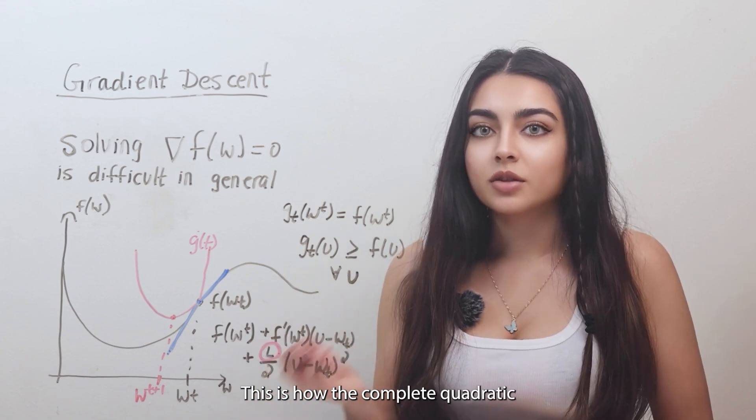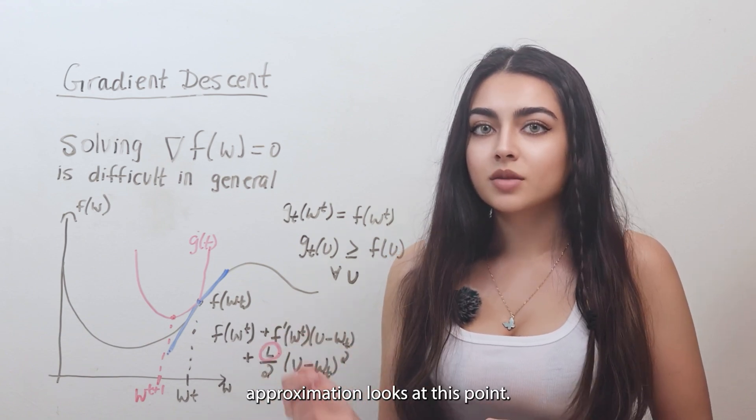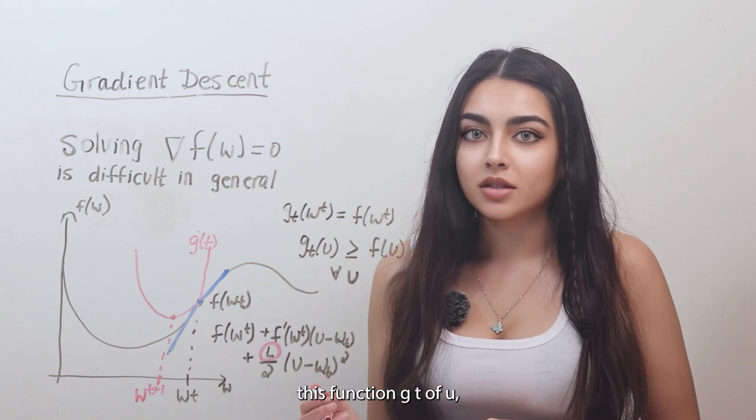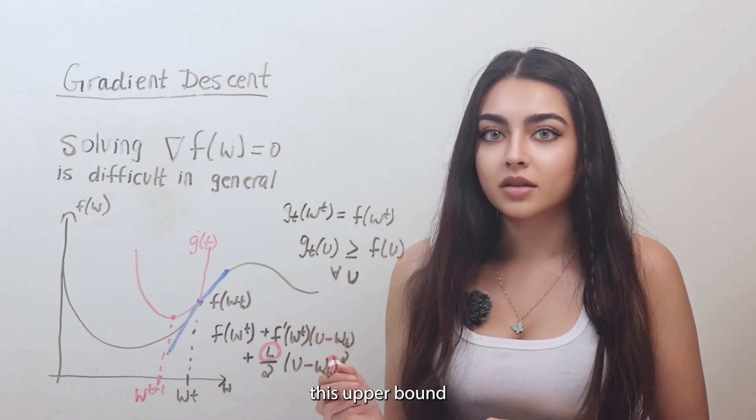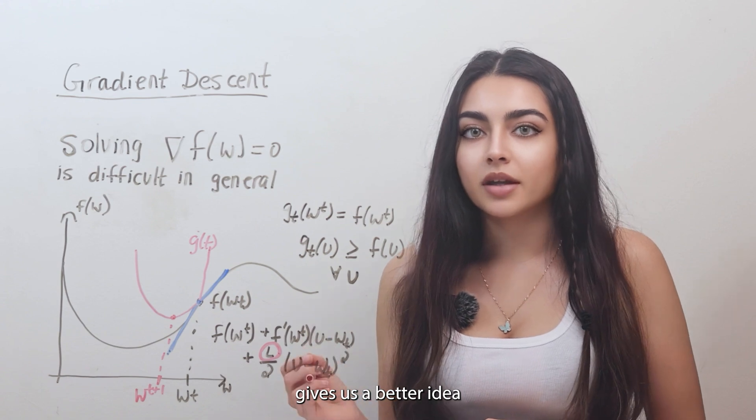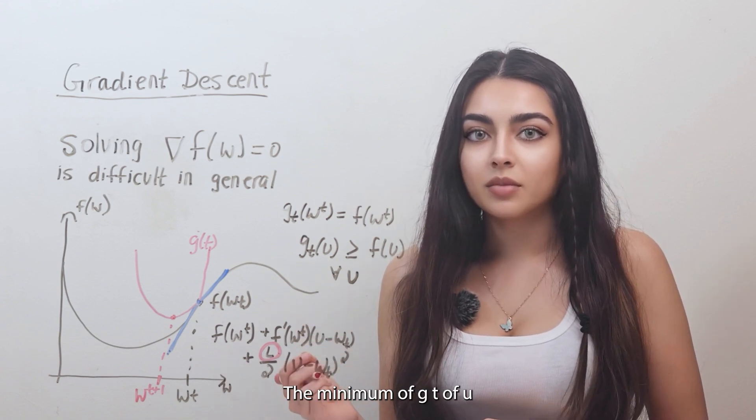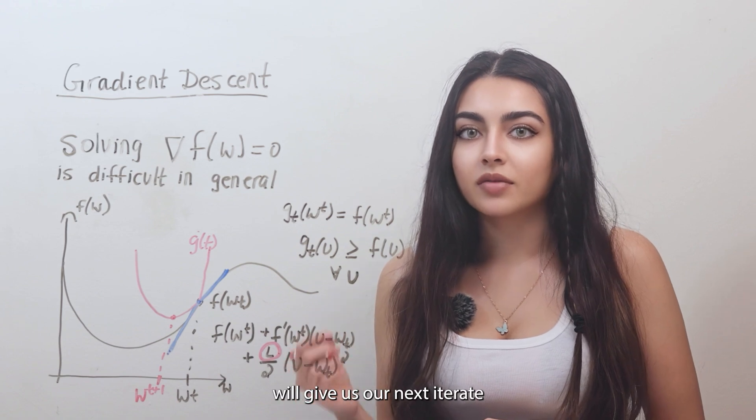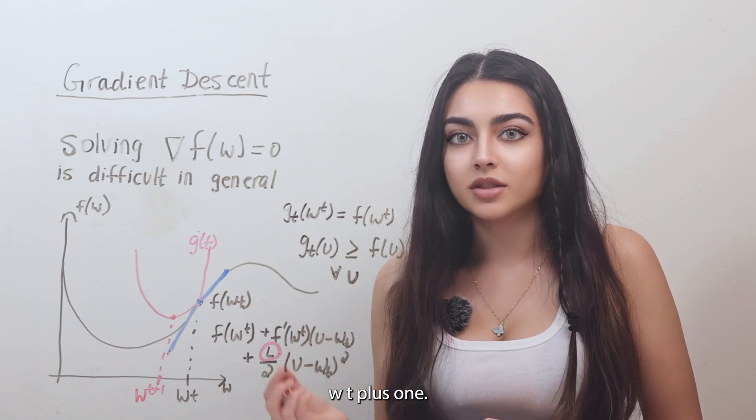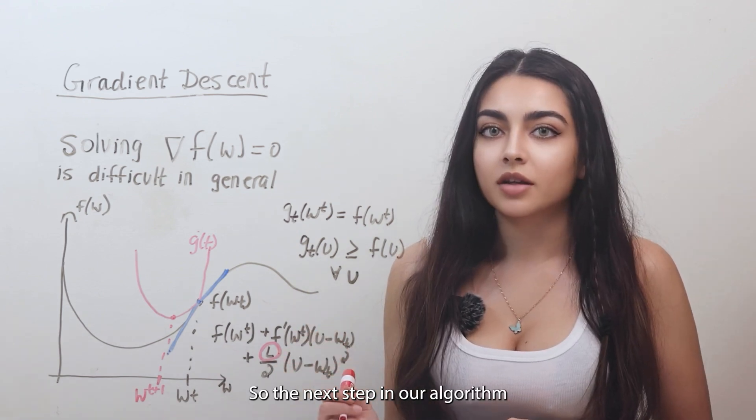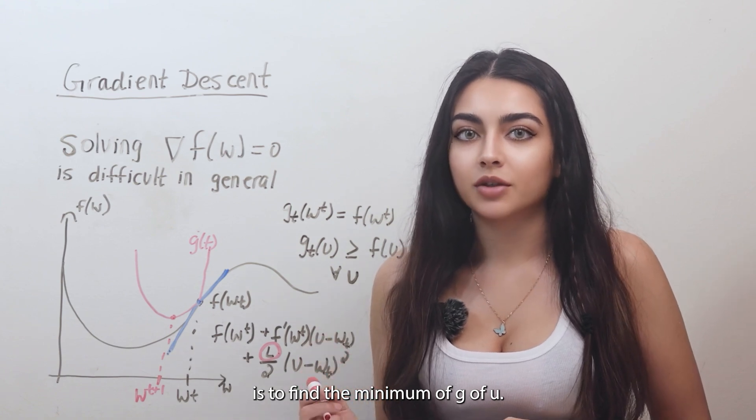This is how the complete quadratic approximation looks. At this point, our goal is to minimize this function gt of u. Because minimizing this upper bound gives us a better idea of where to move in our next gradient descent step. The minimum of gt of u will give us our next iterate wt plus 1. So the next step in our algorithm is to find the minimum of gt of u.